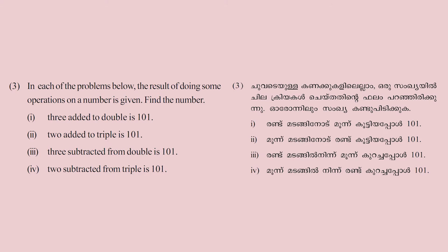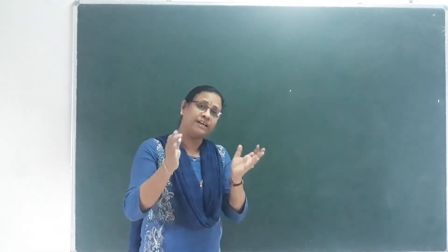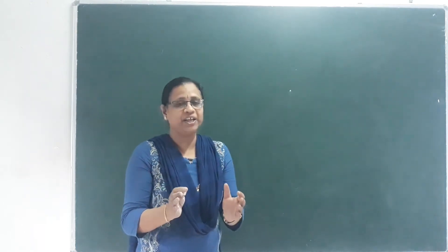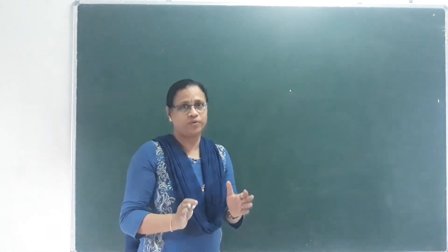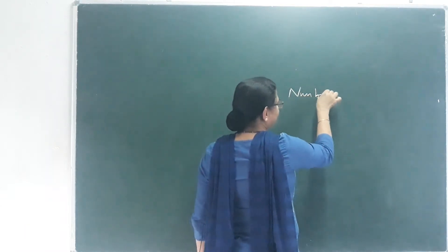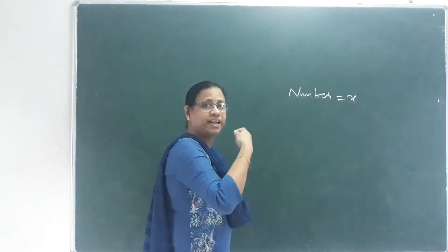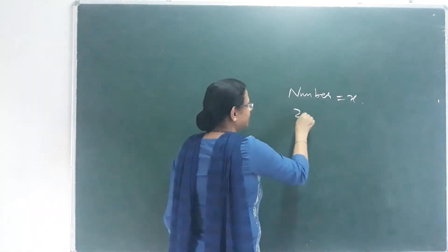In each of the problems below, the result of doing some operations on a number is given — find the number. First question: 3 added to double a number is 101. The number is x. Double x is 2x, and we add 3.